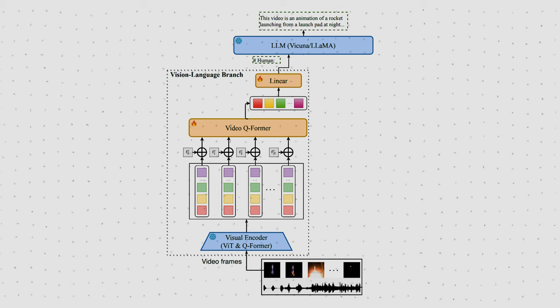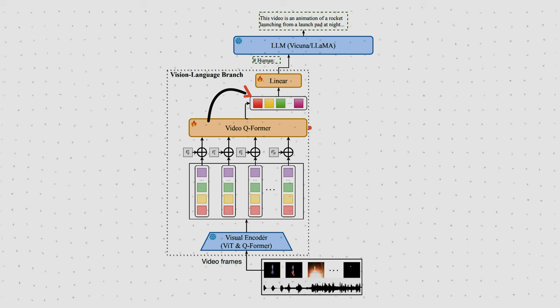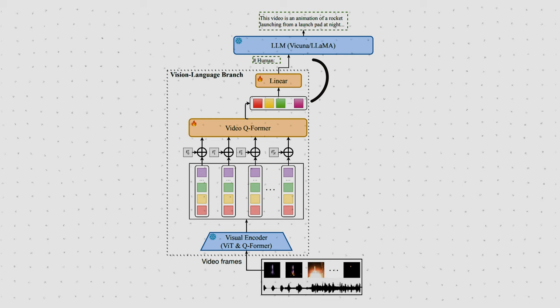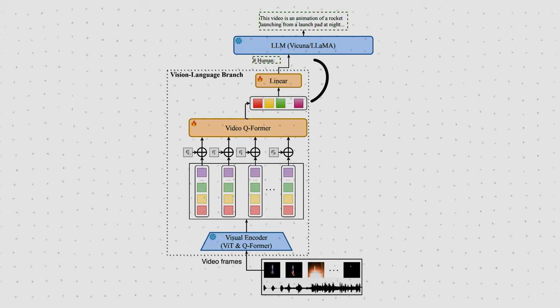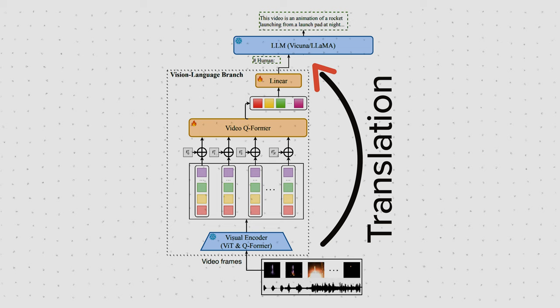Since the frame representations are computed without considering any temporal information, the authors apply a new set of learnable position embeddings as the indicator of temporal order. In the end, we want one embedding for the entire video. The authors introduce a trainable Q-Former that compresses all frame embeddings into one video embedding. Finally, to be able to feed this embedding into the frozen LLM, they add one final linear layer to map the video embedding to the embedding shape used in the LLM. Essentially the goal of this branch is to optimize the learnable parameters such that the image or video embeddings produced by the frozen encoder make sense to the embedding patterns that the LLM has learned. In other words, we are learning a translation from an entire video in vision representation space to a single description in language representation space.